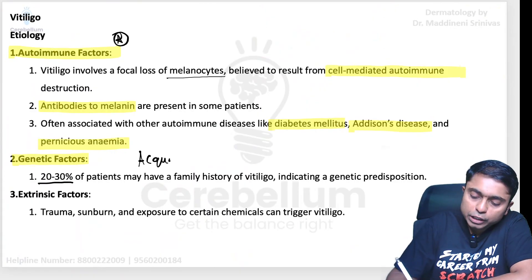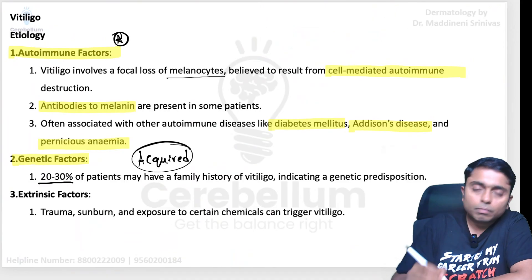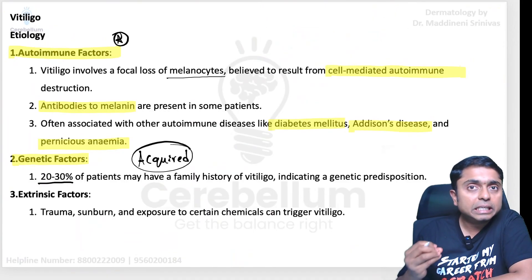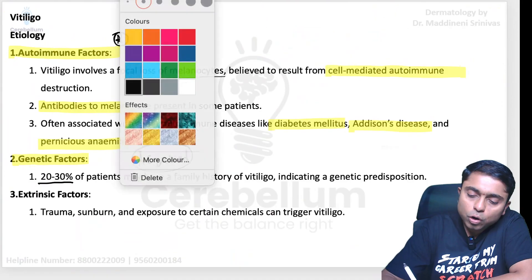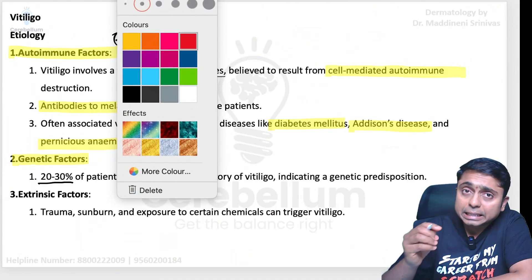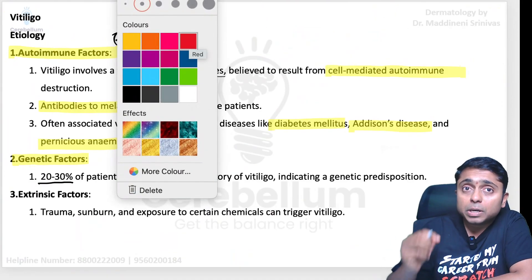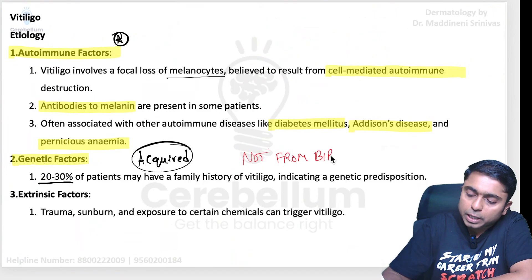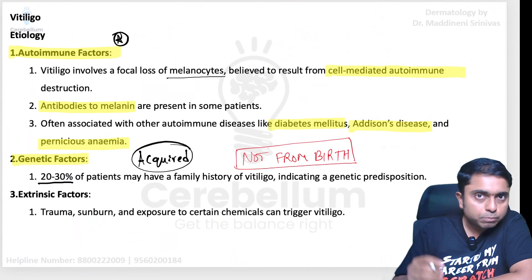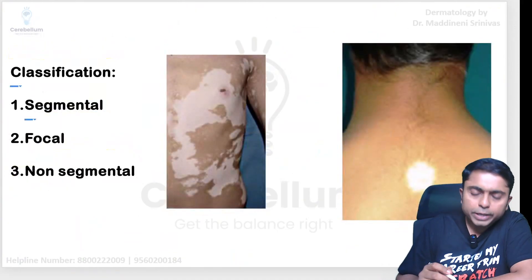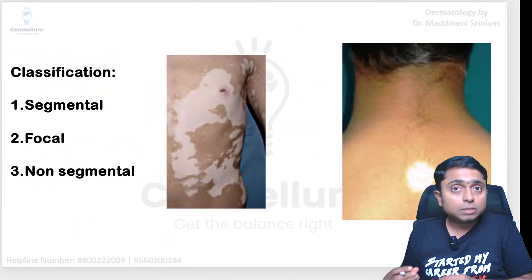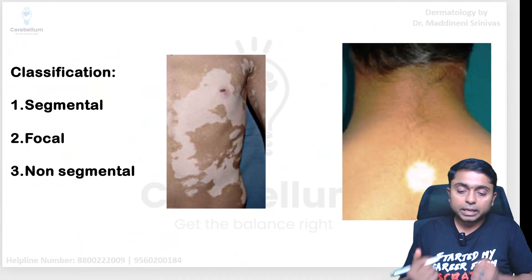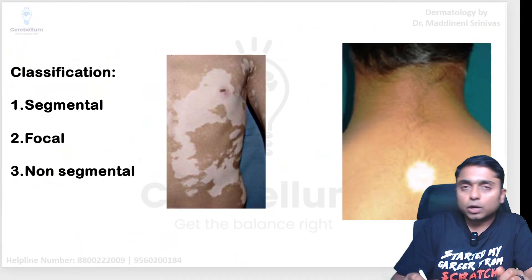Remember, vitiligo is an acquired condition — not present from birth. Lesions are going to be seen initially in childhood, but congenitally the patient is going to be absolutely normal. It is only during the childhood phase when the destruction of melanocytes begins and the lesions start to develop.